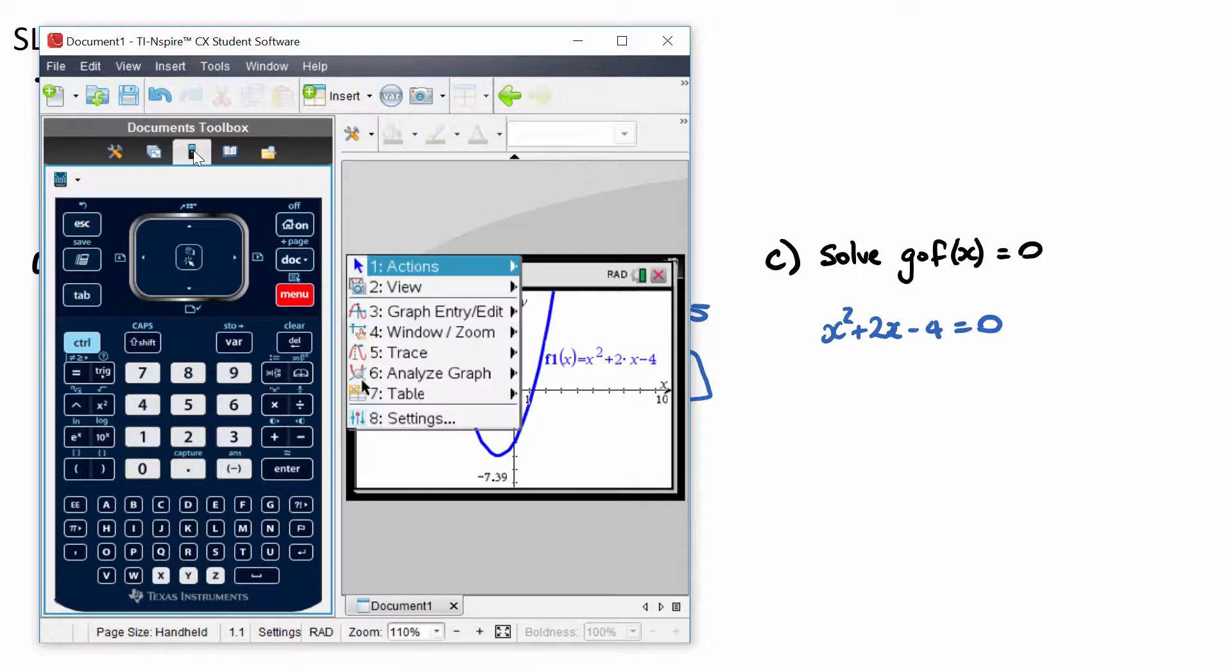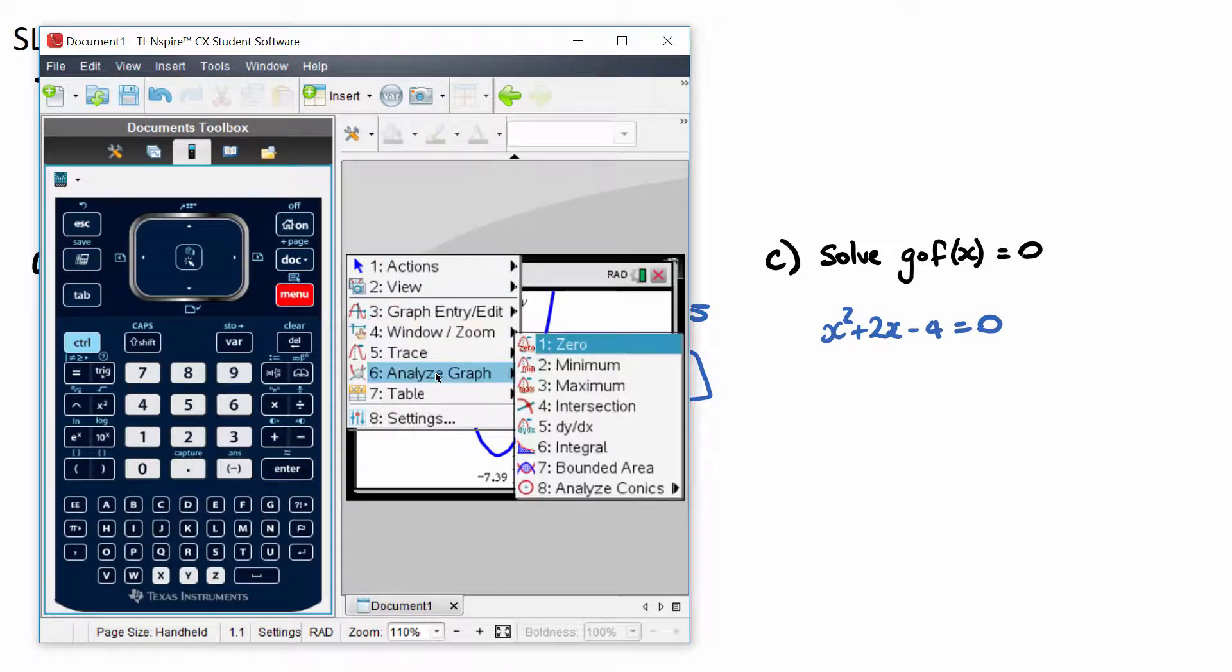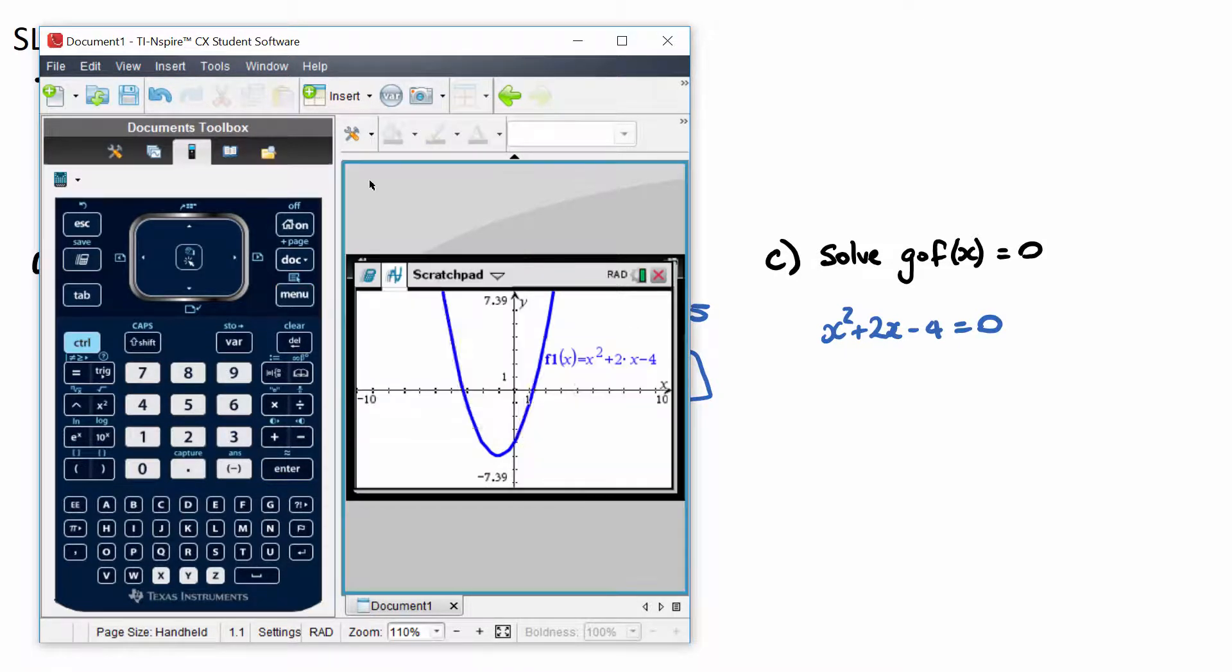And we can find that by going menu, analyze graph, and 0. Now it will ask for a lower bound and upper bound because there's two answers here. This is the first one.